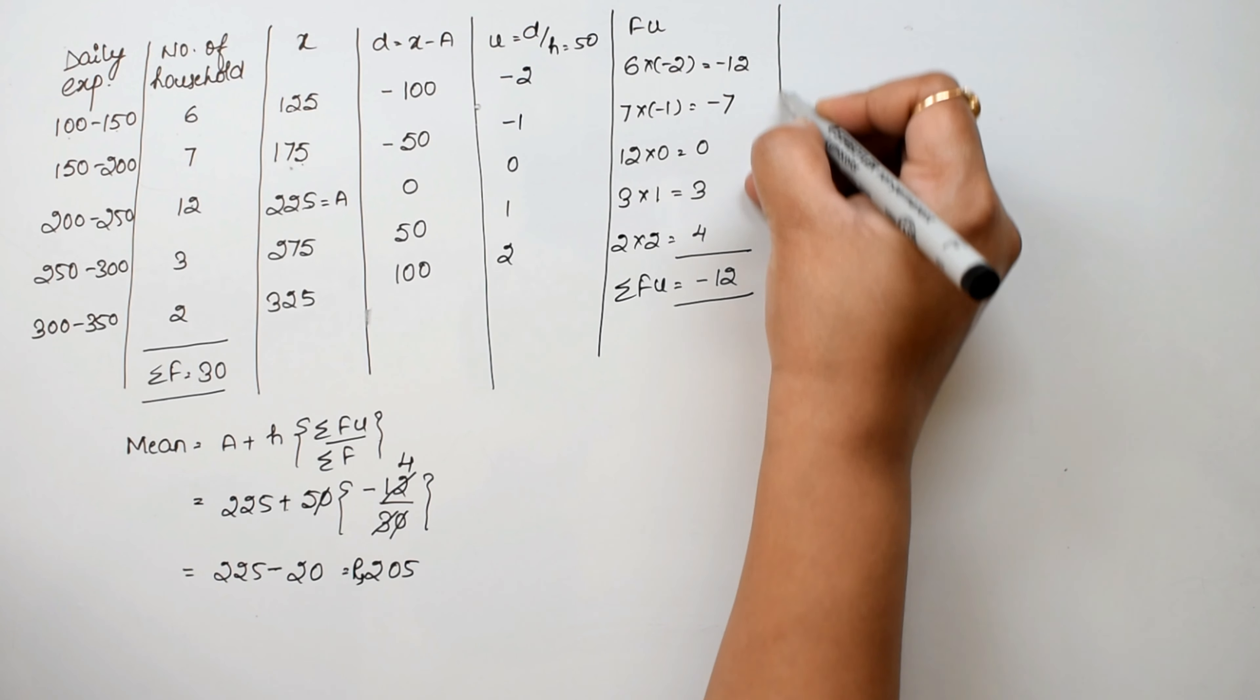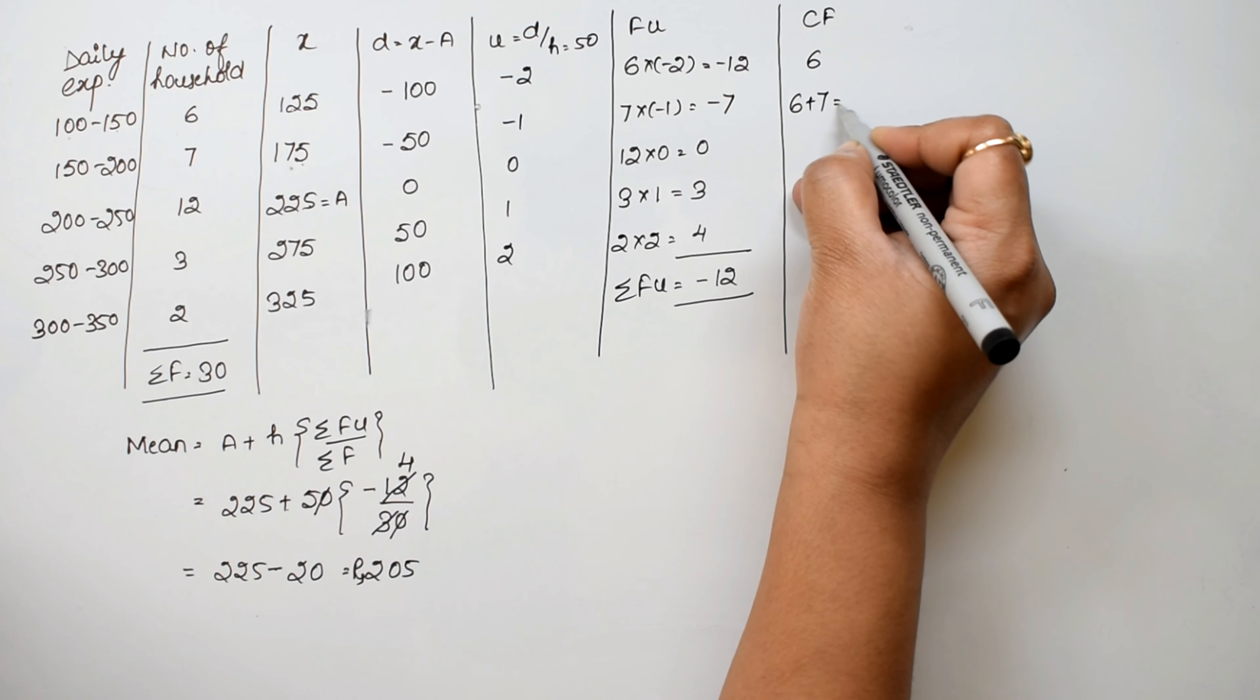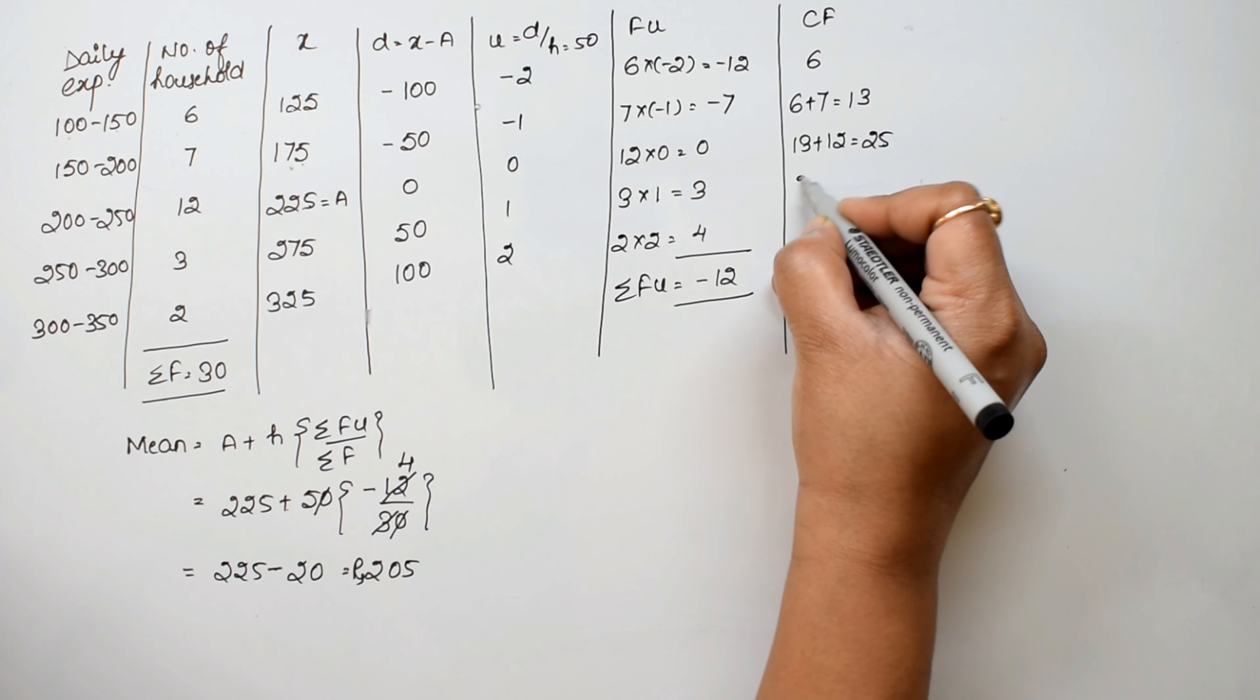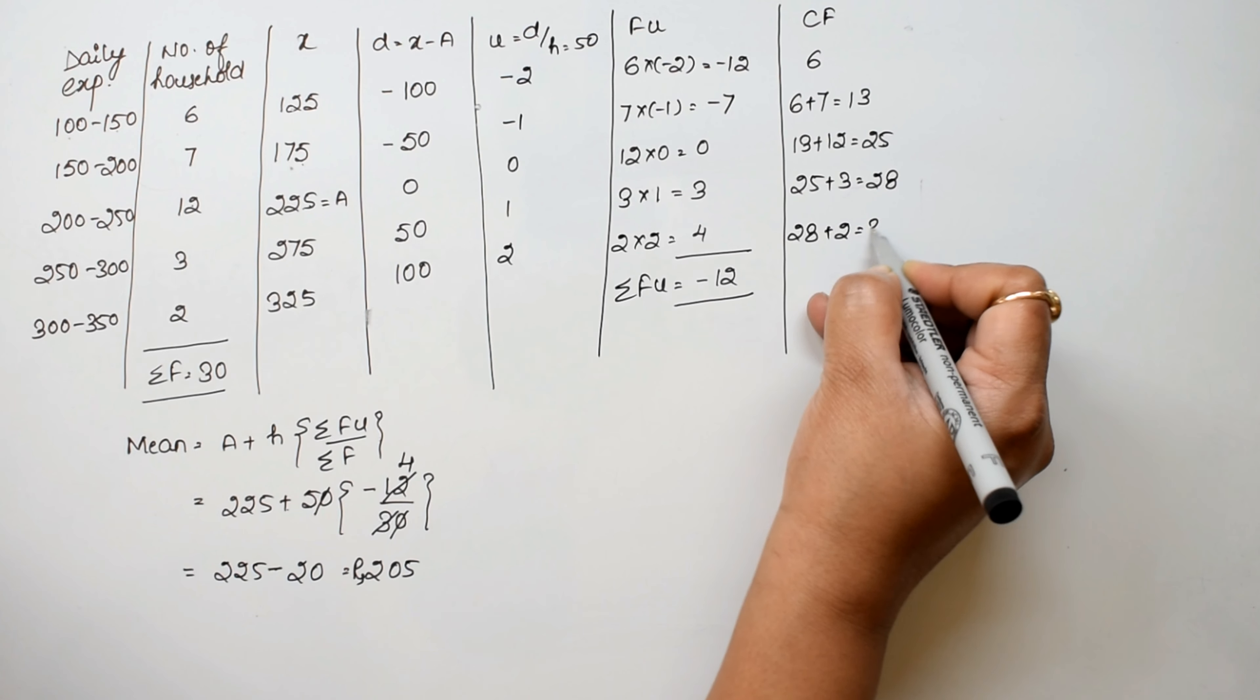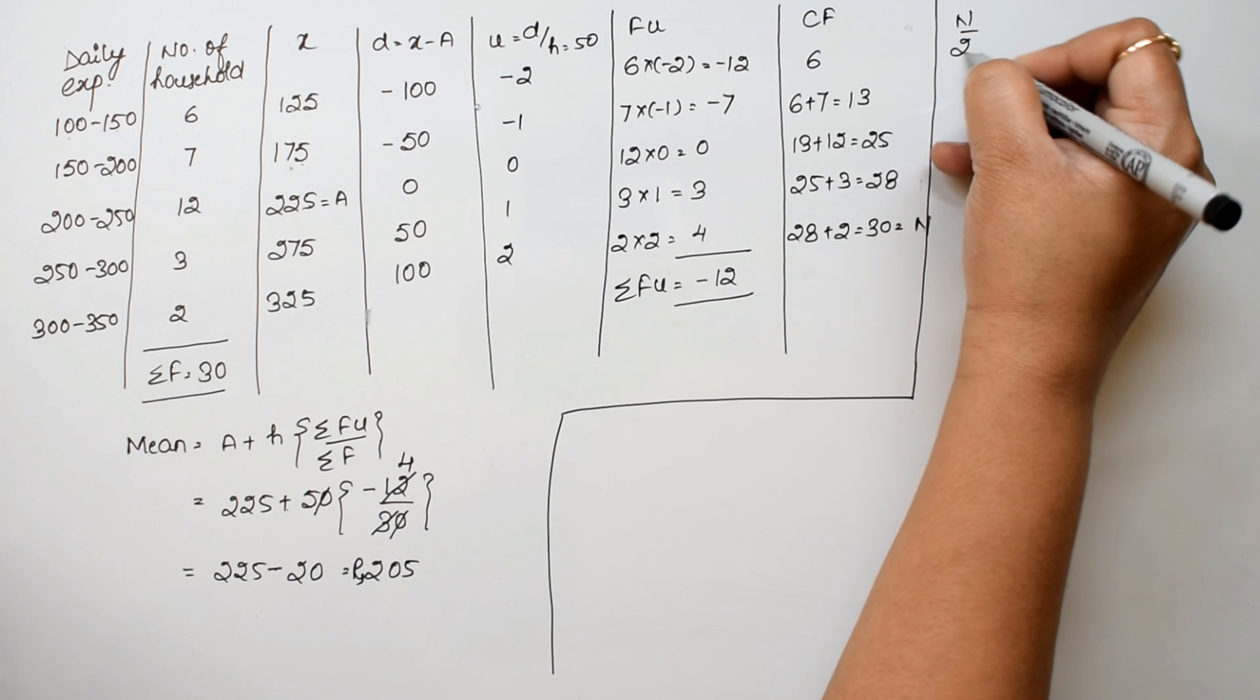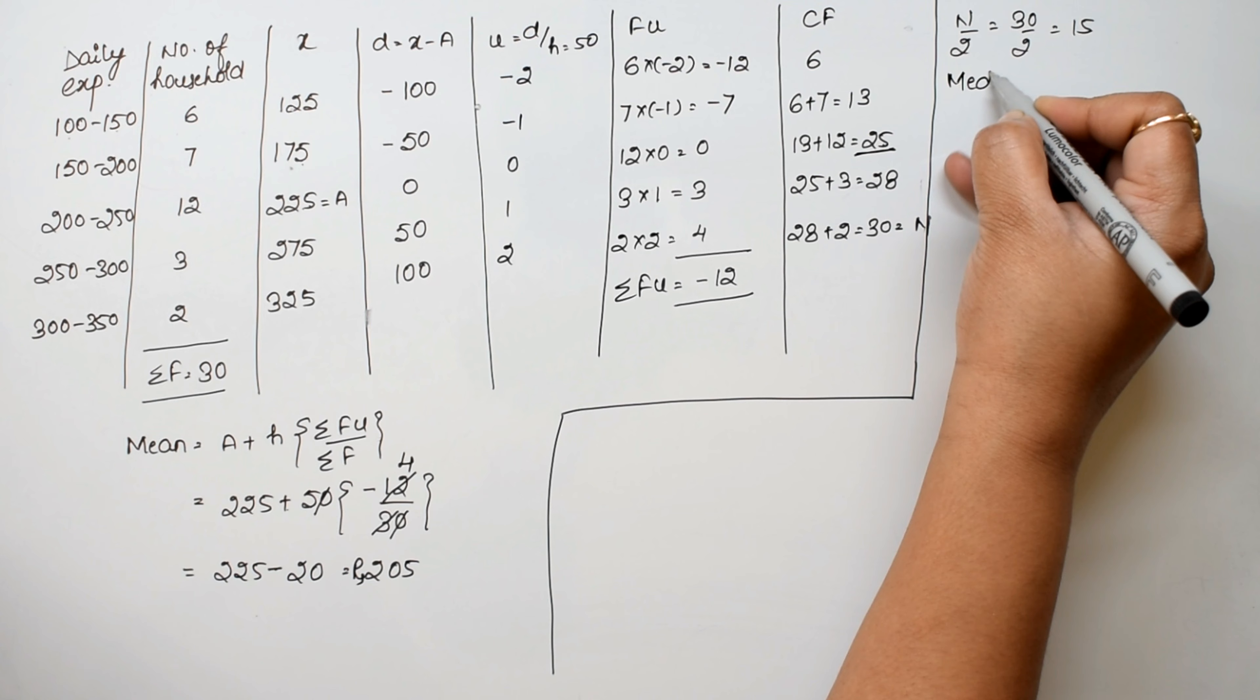Now for median, we need cumulative frequency. Starting with 6, then 6 plus 7 is 13, 13 plus 12 is 25, 25 plus 3 is 28, and 28 plus 2 equals 30. This is our n. Now n by 2 equals 30 divided by 2, that is 15. We need to find where 15 lies in the cumulative frequency.